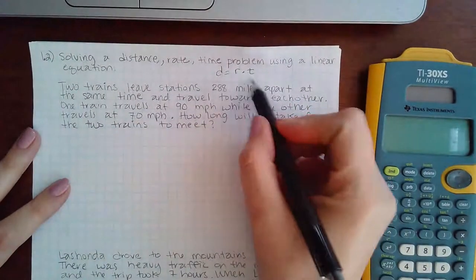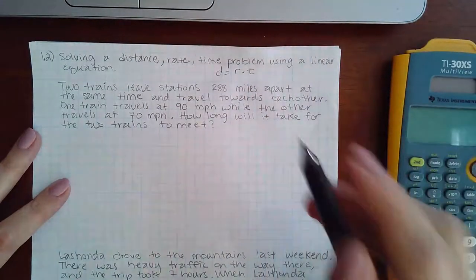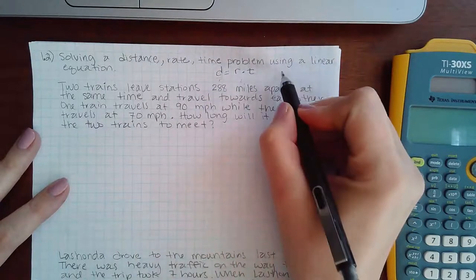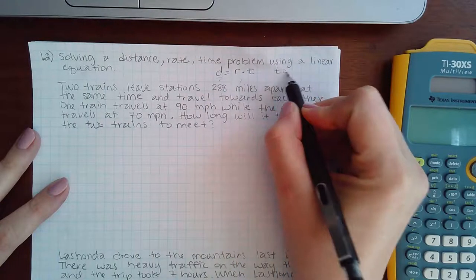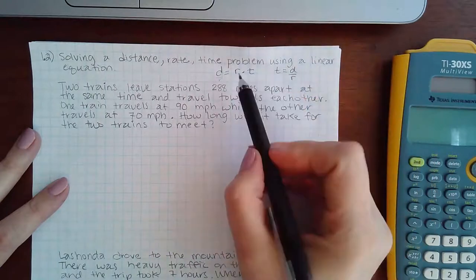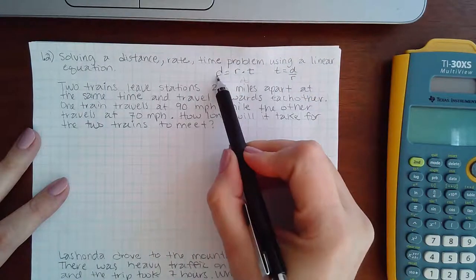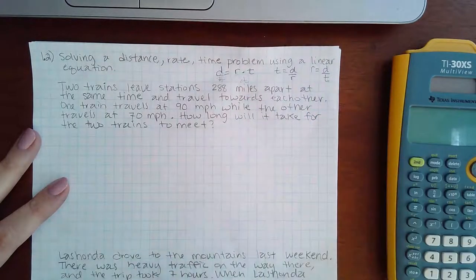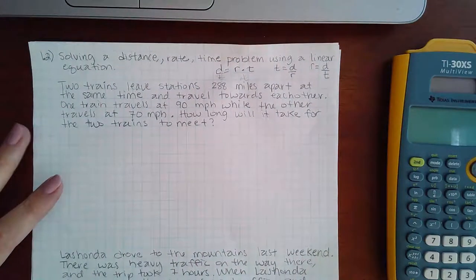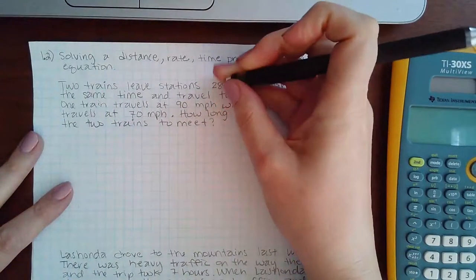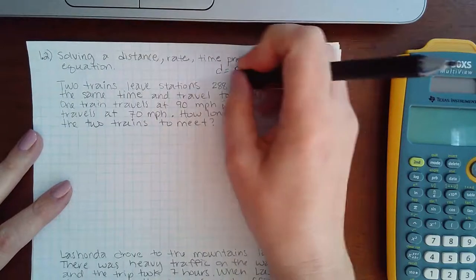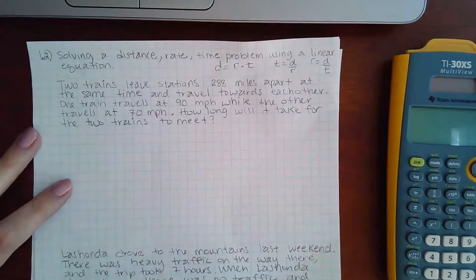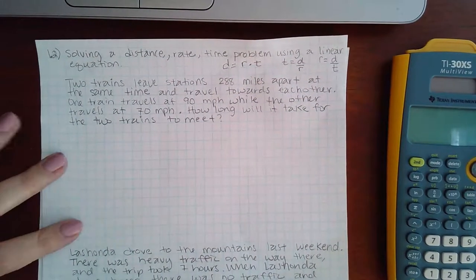Now you can rewrite this equation in other ways by solving for certain variables. So if I divide both sides by R, I would get the relationship that T equals D over R. Or if I divide both sides by T, then I would get the relationship that R equals D over T. So depending on the scenario, I will have to choose which of these three forms of the relationship I should use, and that all depends on the information that they have given me.